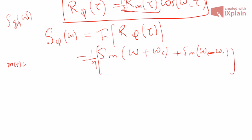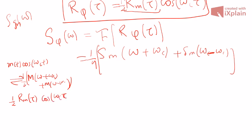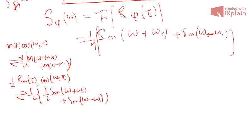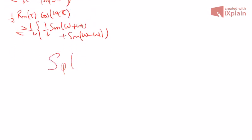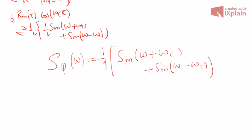You know that if you have M(T) * cos(omega_C * T), its Fourier transform is one-half of [M(omega + omega_C) + M(omega - omega_C)]. Now since we already have one-half of R_M(tau) * cos(omega_C * tau), its Fourier transform is one-half times one-half of [S_M(omega + omega_C) + S_M(omega - omega_C)]. So the power spectral density of the DSBSC signal is S_phi(omega) = (1/4) * [S_M(omega + omega_C) + S_M(omega - omega_C)].